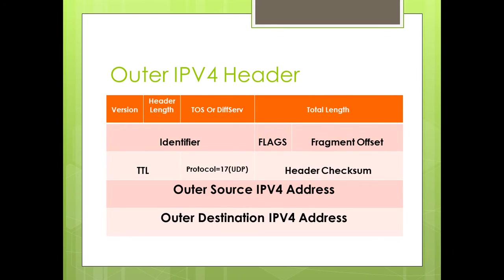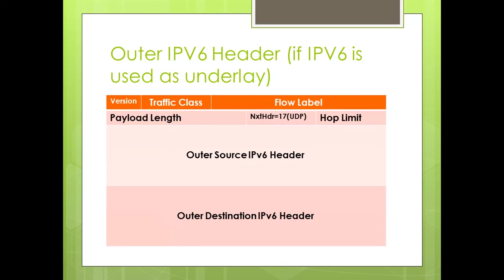In the outer IPv4 header, the protocol field value is always set to 17, indicating UDP. If IPv6 is used as the underlay, the IPv6 header is used instead, and the Next Header field value is also always set to 17.